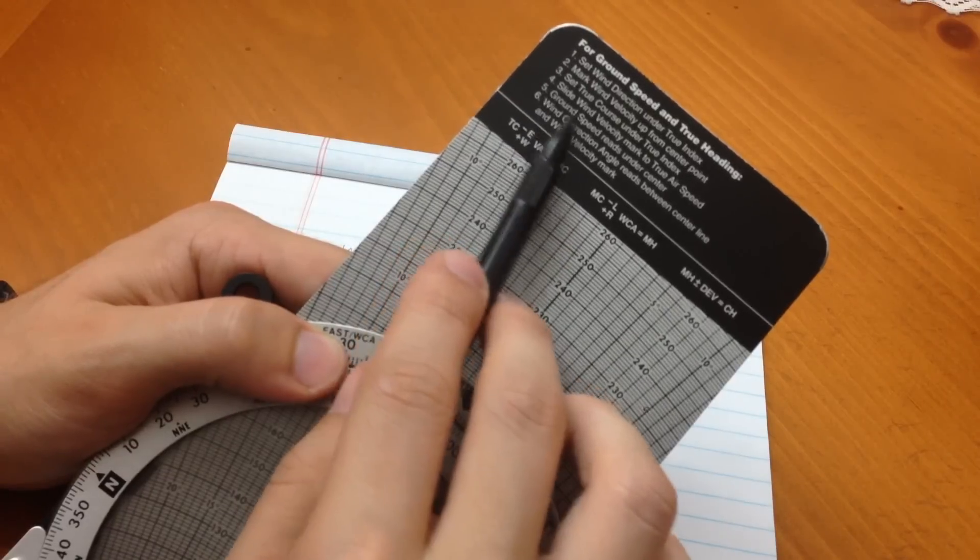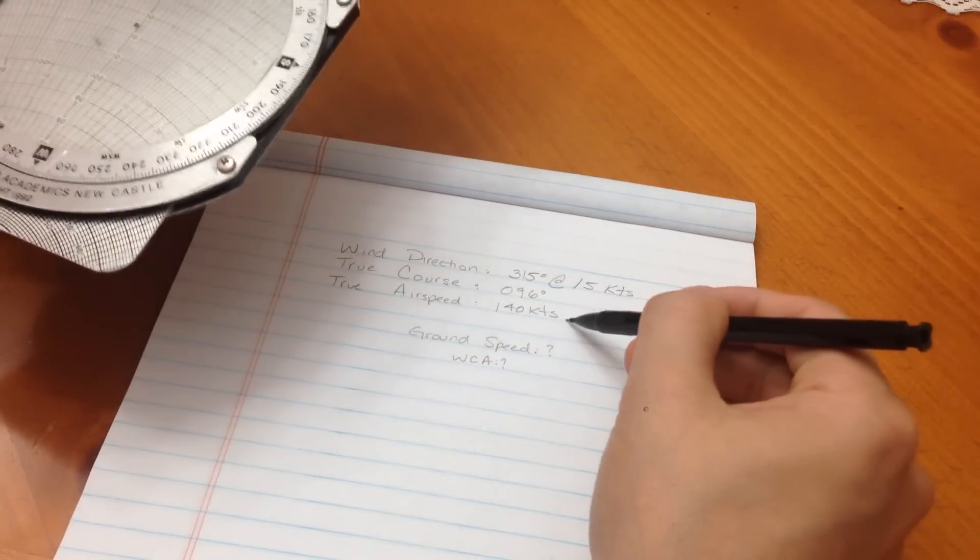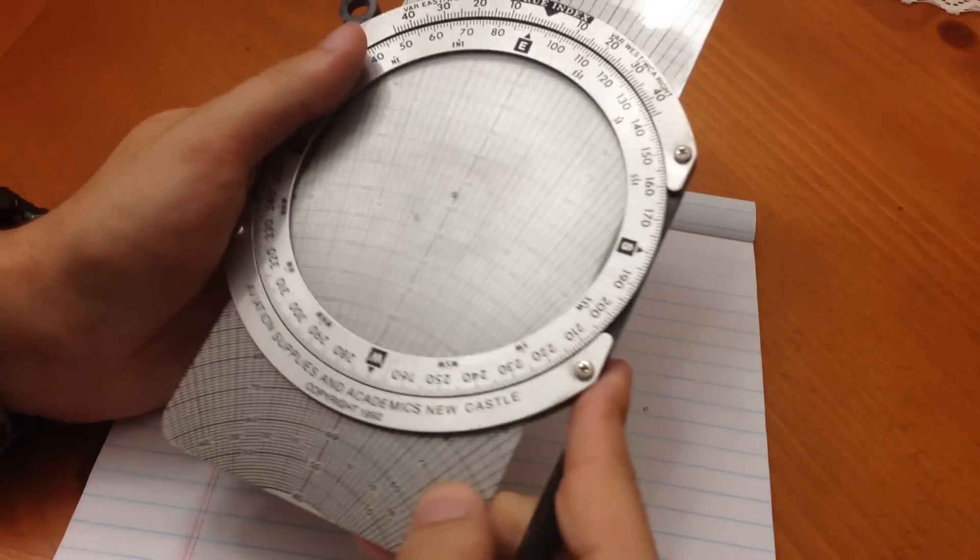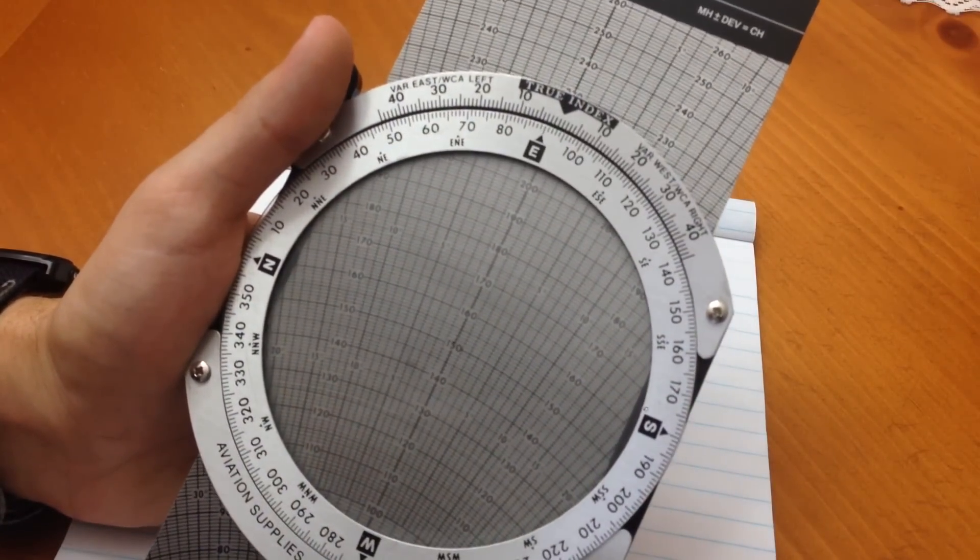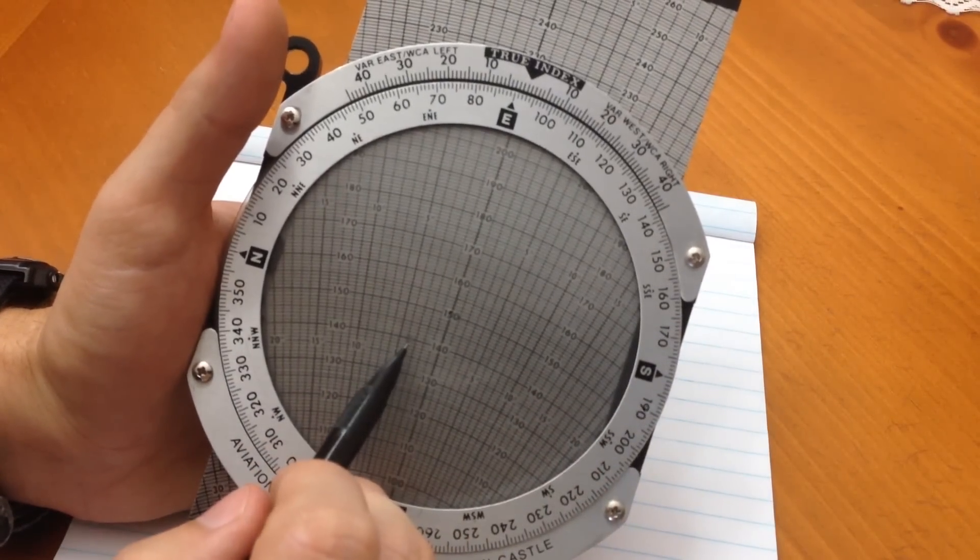We go ahead and go to step four. Slide the wind velocity to mark our true air speed. And our true air speed for this aircraft is 140 knots. So, we're going to slide the back of the E6B until we read 140 knots. So, 140 knots is right here. Notice, I'm not doing the center point.